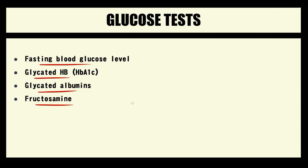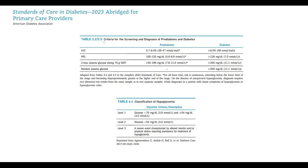In this video we will discuss the clinical implications and the major differences between glucose tests. First of all, why are glucose tests so important? Because according to current guidelines, only based on glucose tests can we make a diagnosis of pre-diabetes and diabetes. As criteria for diabetes, we use glycated hemoglobin, fasting blood glucose level, glucose tolerance test, and random plasma glucose.